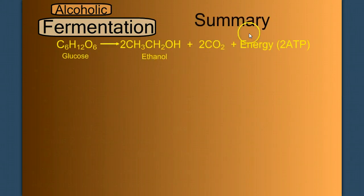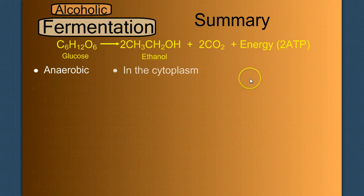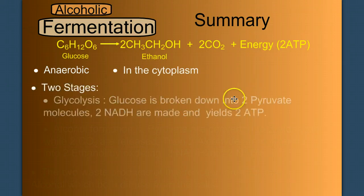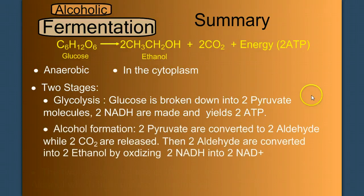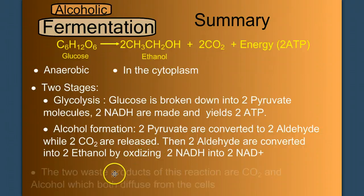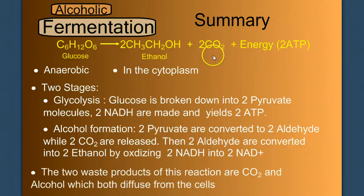Let's summarize. Here we have the overall formula. It's anaerobic — we need no oxygen. It's in the cytoplasm — we need no organelles. It comes in two stages. Glycolysis, where we break down glucose into two pyruvate molecules, producing 2 NADH and yielding 2 ATP. And then alcohol formation: the two pyruvate are converted into two aldehydes while two carbon dioxide are released. Then the two aldehydes are converted into 2 ethanol by oxidizing 2 NADH into 2 NAD+. The two waste products of this reaction are carbon dioxide and alcohol, which both diffuse from the cells.